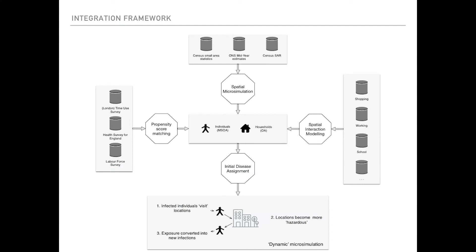The integration framework is where we pull together data on individuals and match that with information from the Time Use Survey, Health Survey for England, and Labour Force Survey, so that we can get an idea of where people spend their time and what they do in different locations. The population we use is based on the outputs of the Spencer project, an Alan Turing Institute project creating a synthetic population of the UK. For every individual in the UK, we have, based on census information and other sources, information on individuals and households.